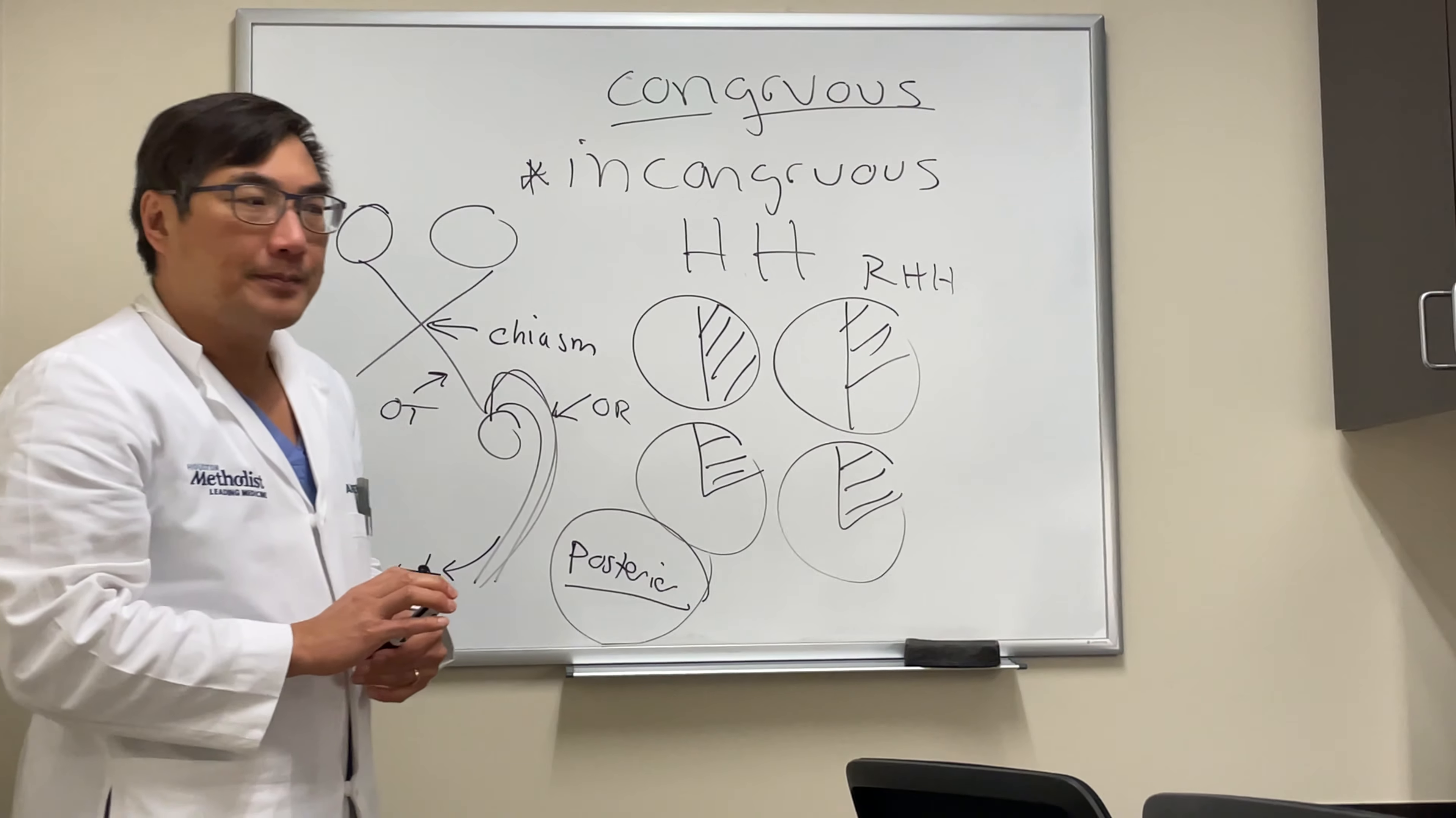If you're in the optic tract or in the radiations, it's much more likely that you're going to get an incongruous field defect. The reason is the fibers are spread out. The radiations are called radiations because they radiate out, so it's very difficult to make the field defect look exactly the same when the fibers are so spread out.